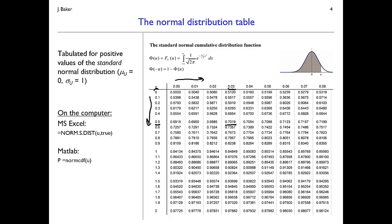If you're in front of a computer, almost any software package will give this to you as well. In Microsoft Excel, you can use NORM.S.DIST and plug in the u value, then enter TRUE to indicate you want a CDF — entering FALSE gives a PDF value. In MATLAB, you can use the function NORMCDF and plug in the value u. Both give the same numbers as are tabulated in the table.